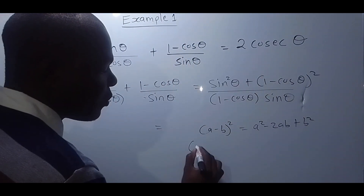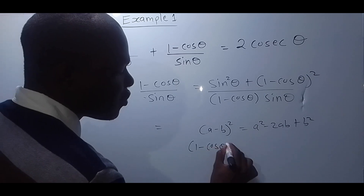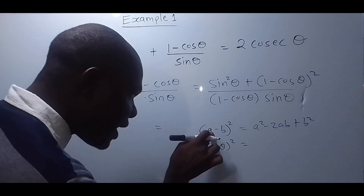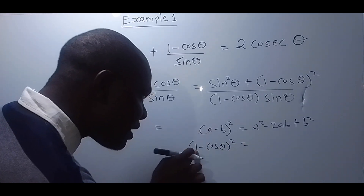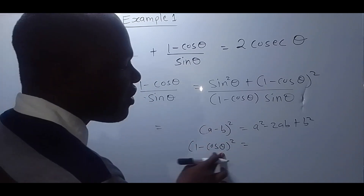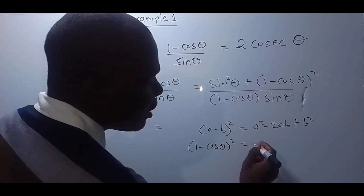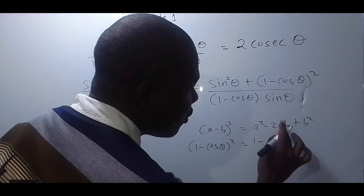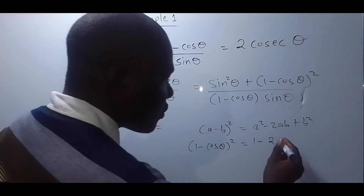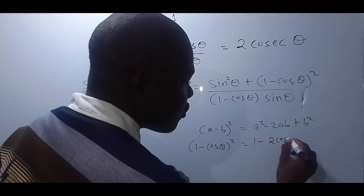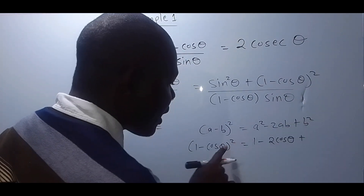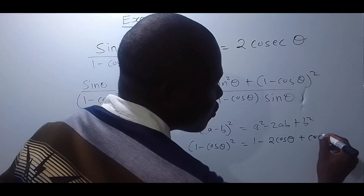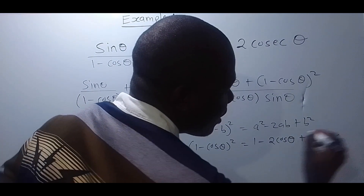In this case, when we expand 1 minus cos theta squared, A is 1 and B is cos theta. So we get 1 squared minus 2 times 1 times cos theta plus cos squared theta, which gives 1 minus 2 cos theta plus cos squared theta.